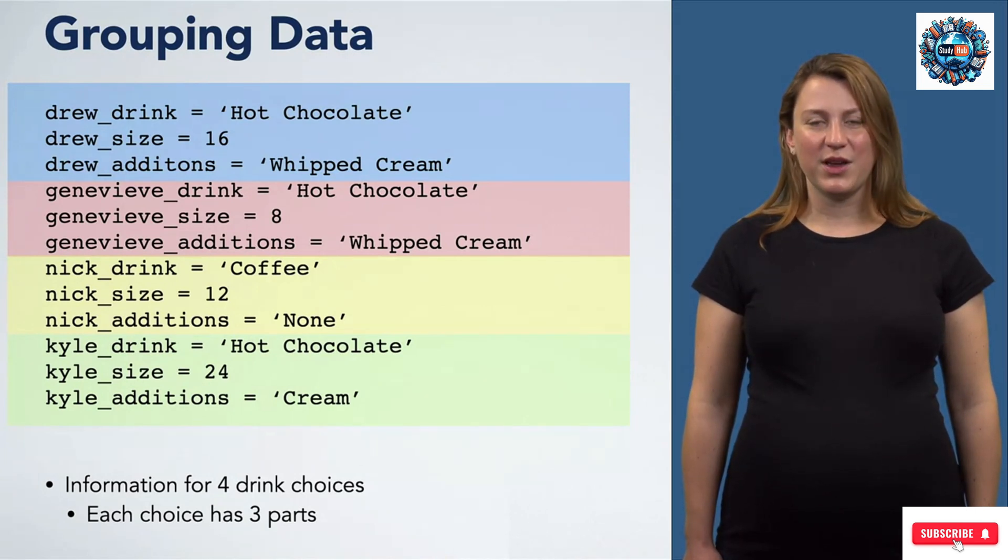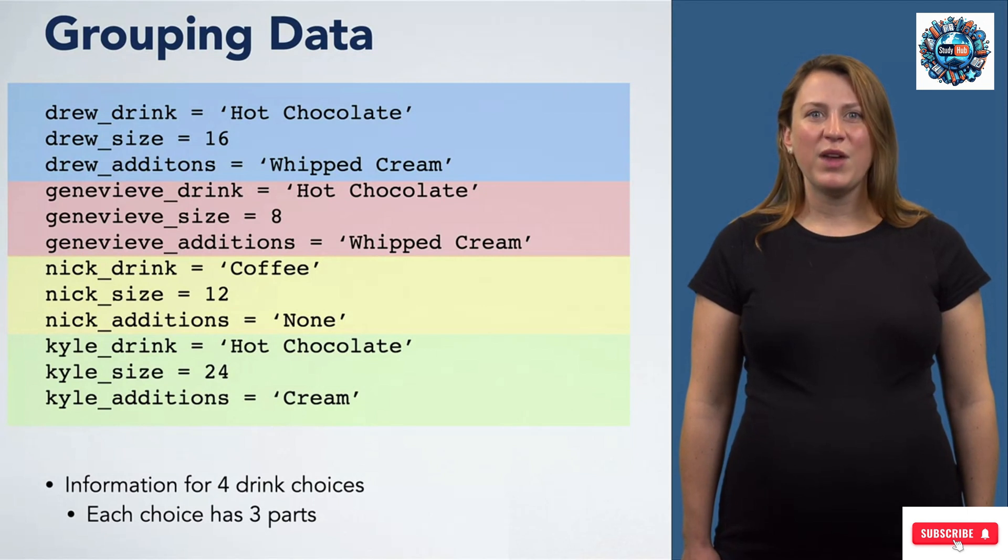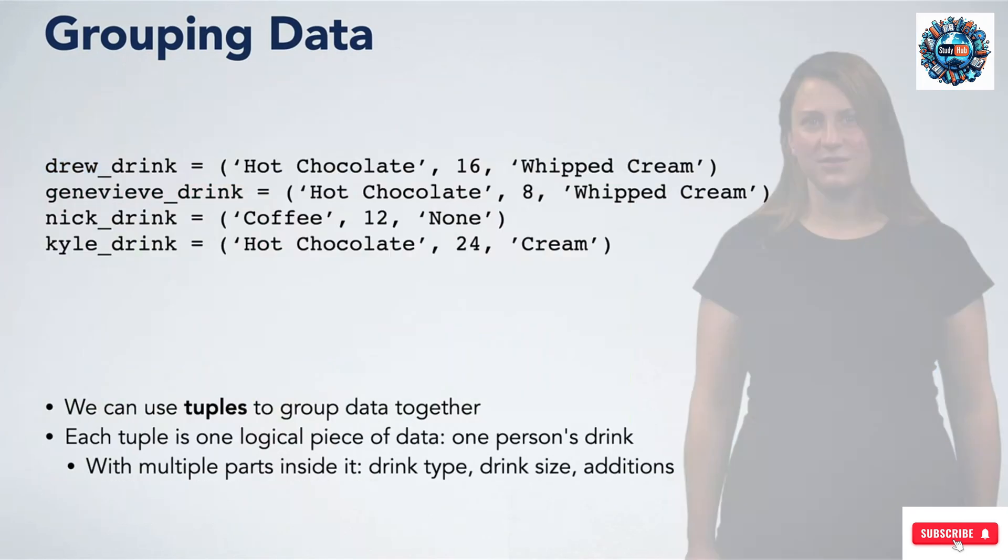Then we have Nick's choices in yellow and Kyle's in green. When we have a situation like this, we would like to group the pieces of data together into one logical piece of data, like this.